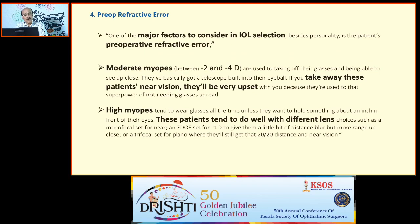Preoperative refractive error. One of the major factors to consider in IOL selection is the patient's preoperative refractive error. Moderate myopes between minus 2 and minus 4D are used to taking off their glasses and being able to see up close — they basically have a telescope built into their eyeball. If you take away their near vision, they will be very upset. High myopes also require very careful lens selection.